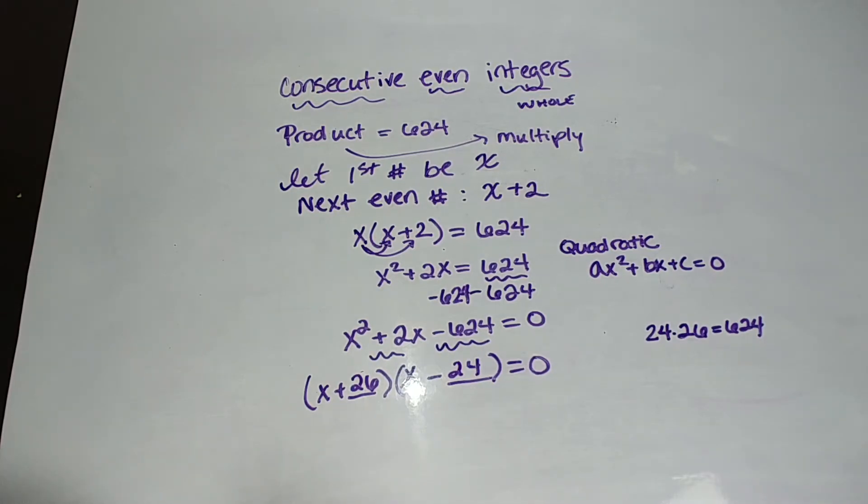So what do we do when we have two factors multiplied equal to zero? We set each factor equal to zero. So x plus 26 equals zero. x minus 24 equals zero. So we get x equals negative 26. x equals 24.